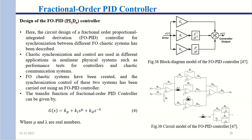Moving on to the fractional order PID controller. The integral order is γ and the derivative order is μ, and the transfer function is given by G(s) = K_p + K_i·s^μ + K_d·s^(−λ).